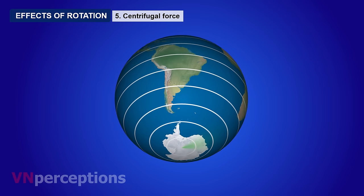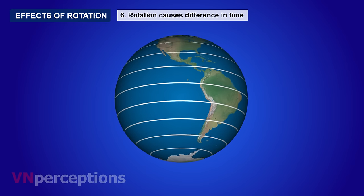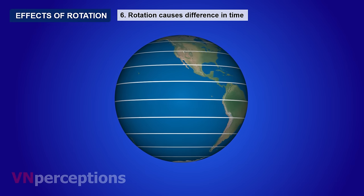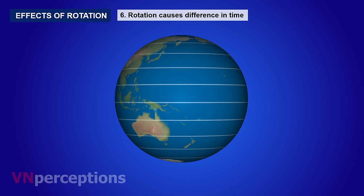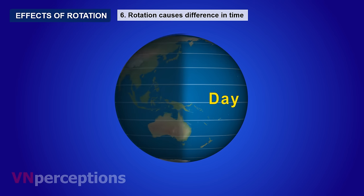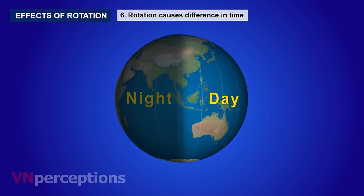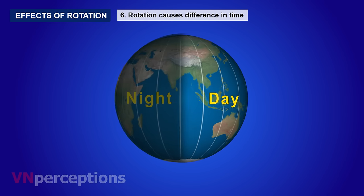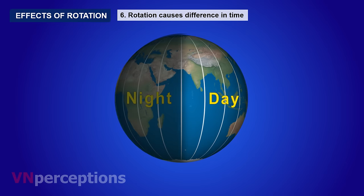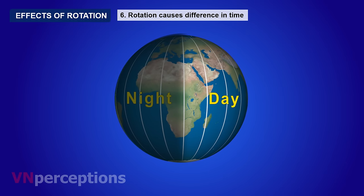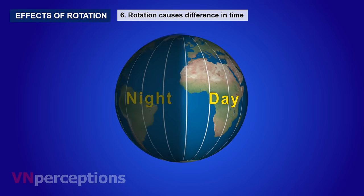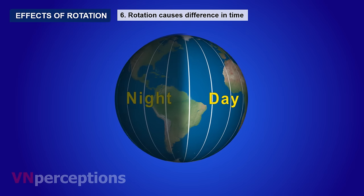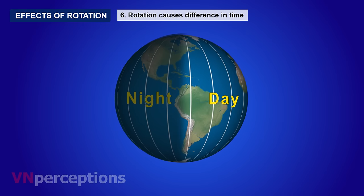Rotation also causes difference in time. Because when the earth is spinning, some part has day and some other part has night; some part has sunrise happening and somewhere else the sun is setting. So different parts of the earth will have different time.